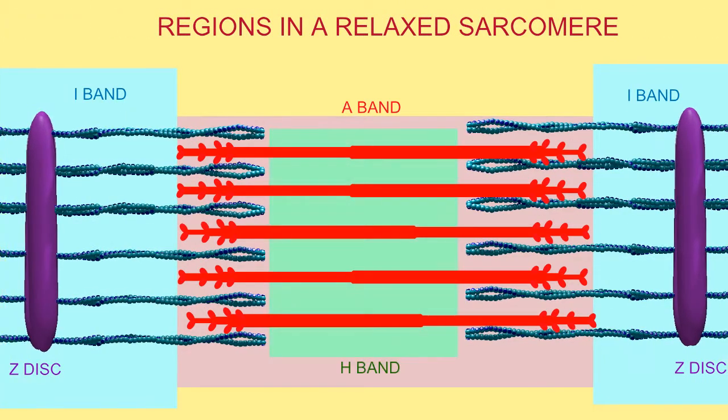The H-band is only visible in resting muscle fibers, marking the portion where there are myosin-thick filaments but no actin-thin filaments.